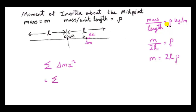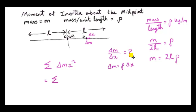To write δm in terms of x, we use the fact that the rod is uniform: any piece of mass divided by its length equals ρ. So δm divided by δx equals ρ, which gives us δm = ρ δx. Since ρ is a constant, we can write the contribution of each element as ρ δx · x², and ρ can be pulled outside the summation sign.